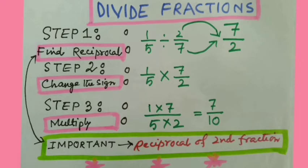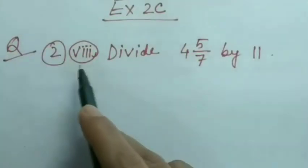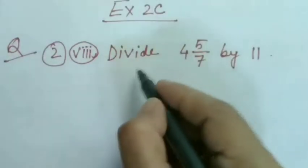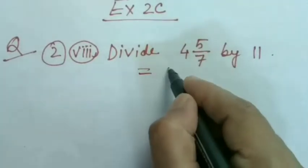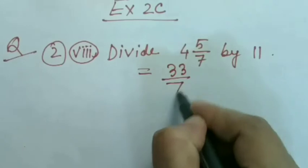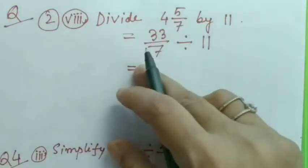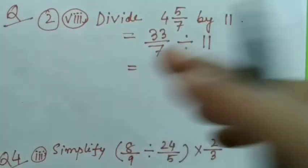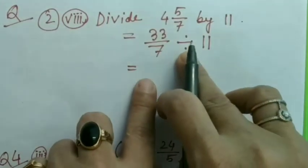Let's do some examples. Exercise 2C, question number 2: Divide 4 5/7 by 11. This equals 4×7=28, 28+5=33, so 33/7 ÷ 11. The next step is to write the reciprocal of the second fraction. As soon as we write the reciprocal of the second fraction, we will change the sign from division to multiplication.